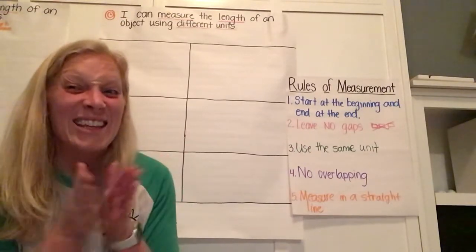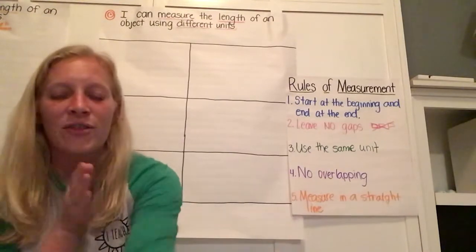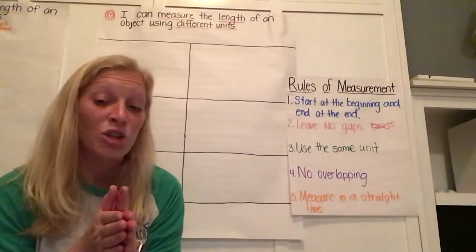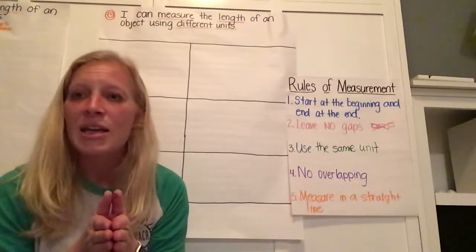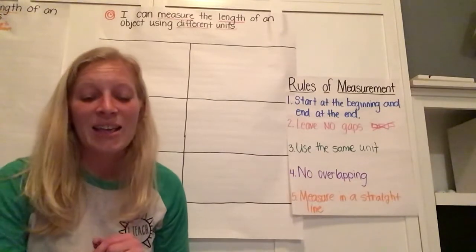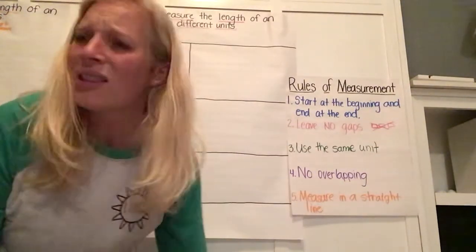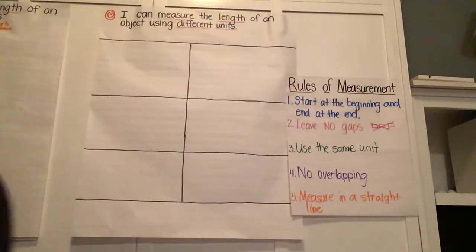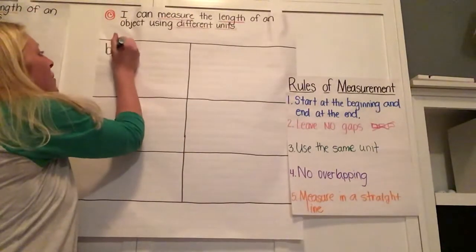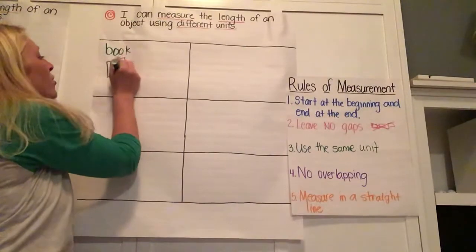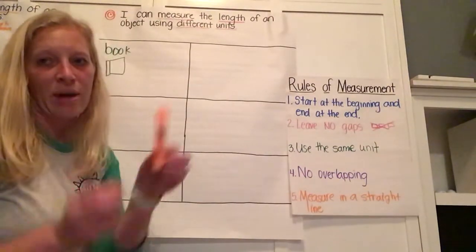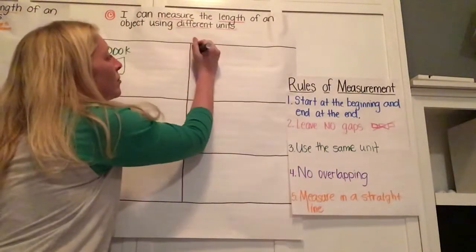We have chosen six objects that we're going to measure. If you have these objects and want to measure them with us at home, you're more than welcome to. If you have different things you want to measure, you could do that too. The most important thing is to be looking at the units of measurement and what we notice about our results. One of the first things we're going to use is a book — like a book that you just love to read. Let me show you the book we're going to use. A little book. And also one of my markers.